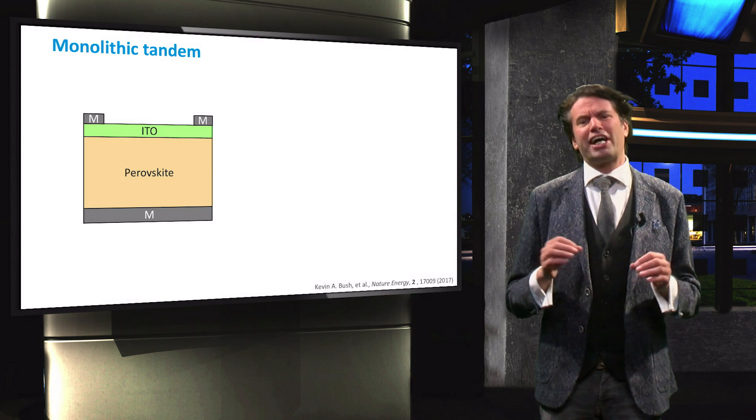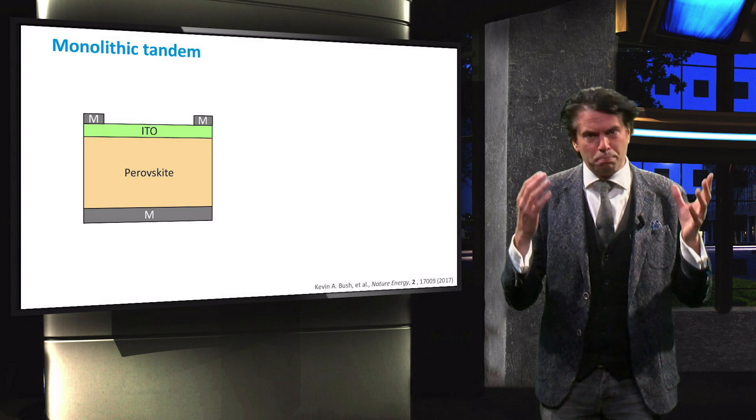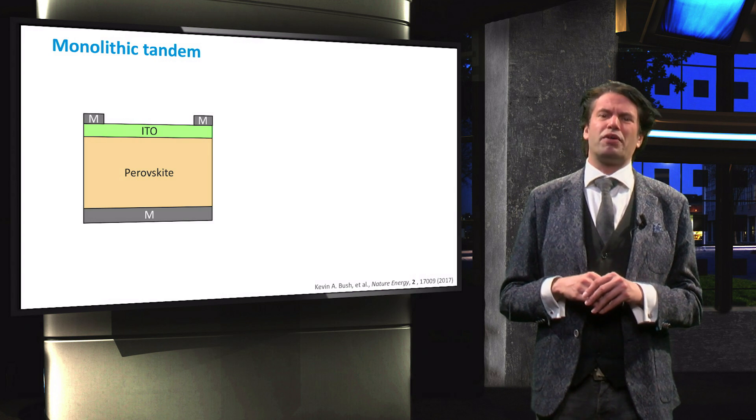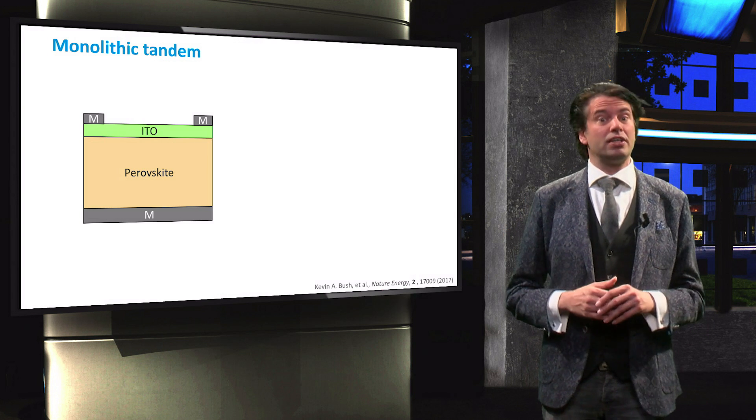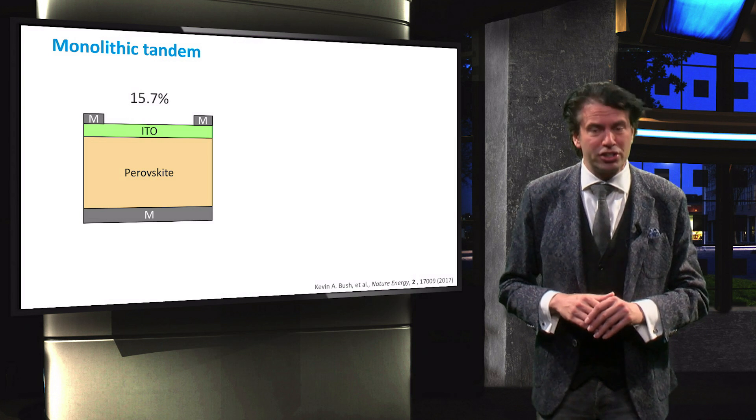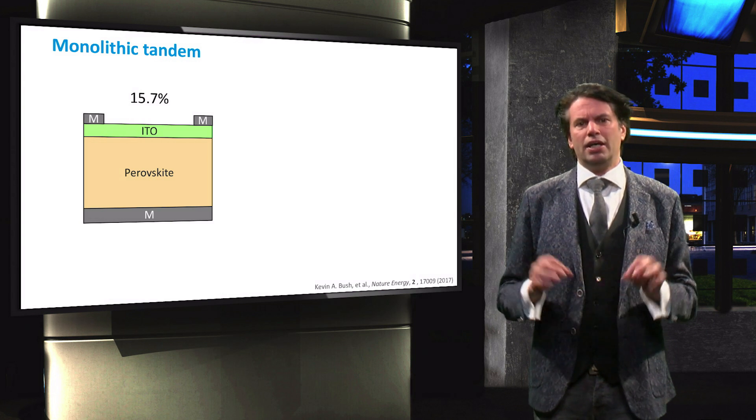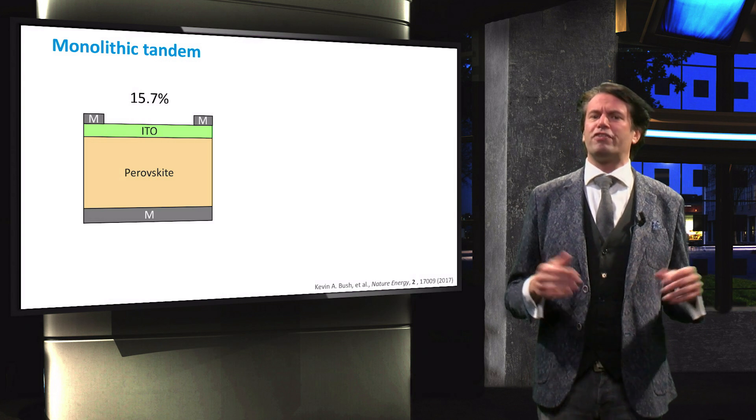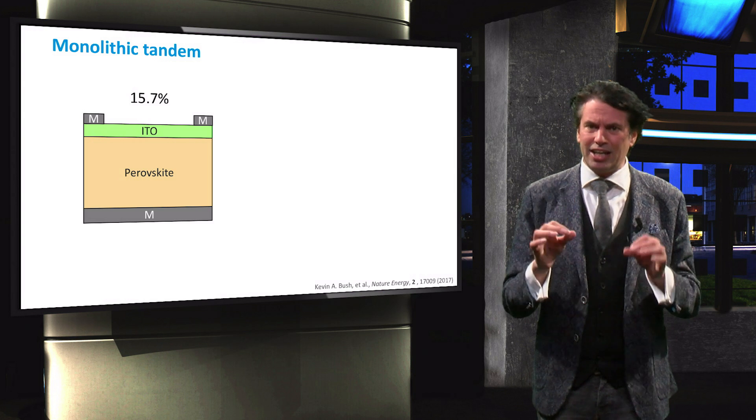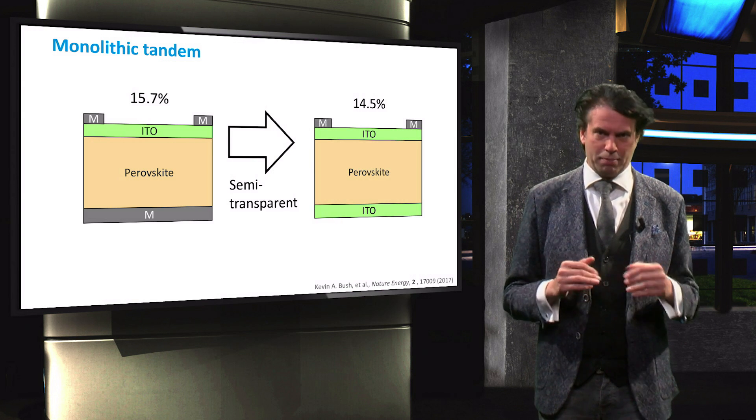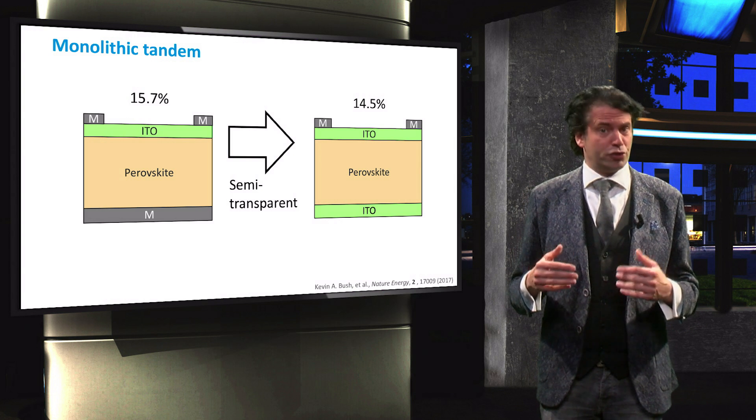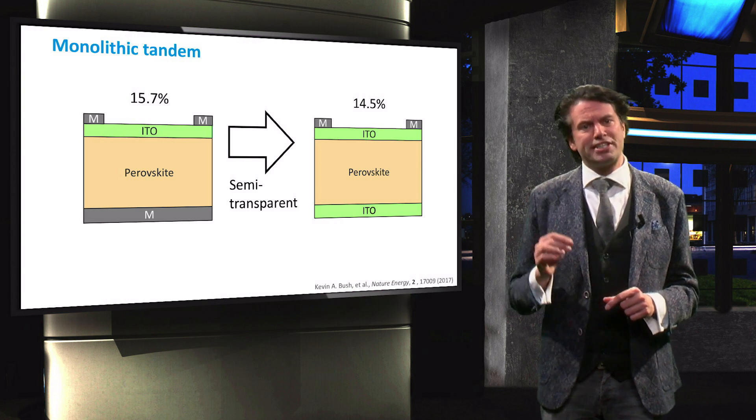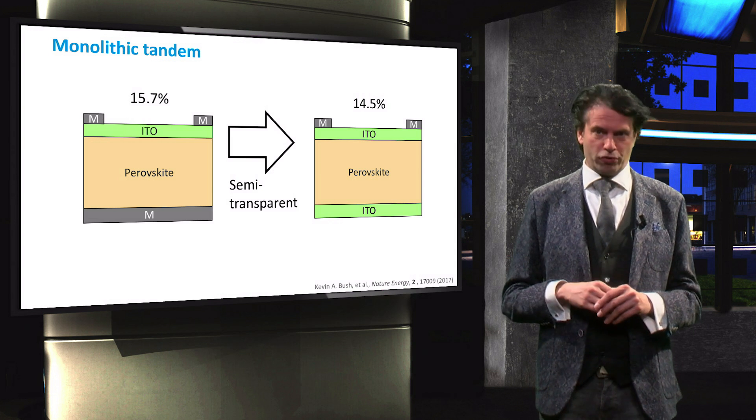The basis for the perovskite top cell is an opaque perovskite cell with a bandgap of 1.63 eV, which is slightly below the optimal range and an efficiency of 15.7% is reached. This cell also requires some modifications since it is important that the cell is transparent for light below the perovskite bandgap. The semi-transparent adapted version that is suitable for the tandem device has a lower stand-alone efficiency of 14.5%.